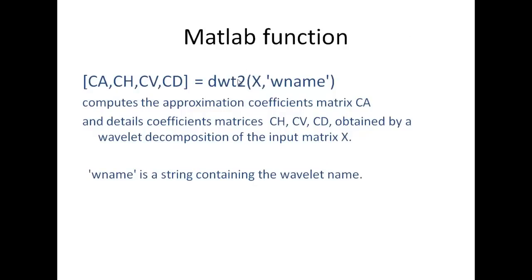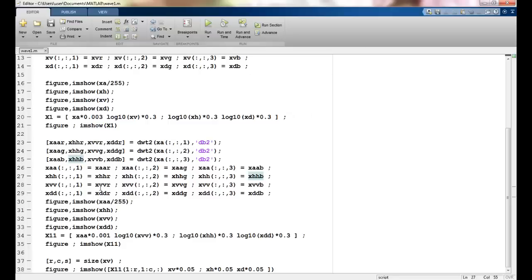The MATLAB function used to execute this is `dwt2`, which takes x as my input matrix and wname as the name of the mother wavelet. This gives me four components: an approximate coefficient matrix A, which is my approximate image, and the horizontal, vertical, and diagonal detail matrices.